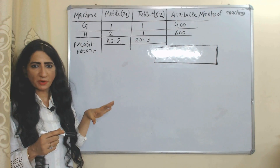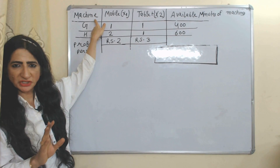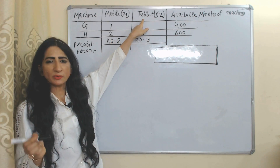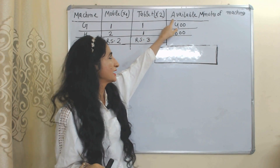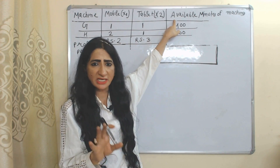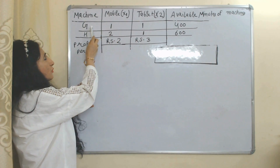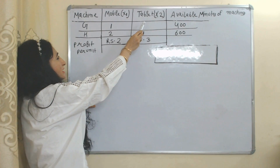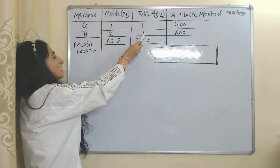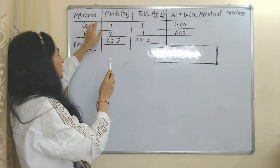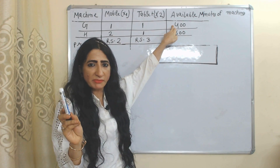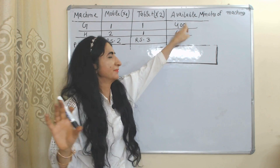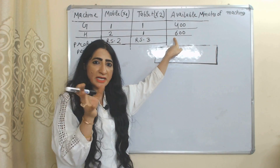Based on this problem, we made one table. The first column has machine types. The second column has mobile — we are producing a total of X1 units of mobile. The next column has tablet — we are producing a total of X2 units of tablet. The last column has available minutes for machines G and H. Mobile requires 1 minute on machine G and 2 minutes on machine H. Tablet requires 1 minute on machine G and 1 minute on machine H. Machine G is available for 6 hours and 40 minutes, which converts to 400 minutes. Machine H is available for 10 hours, which converts to 600 minutes.